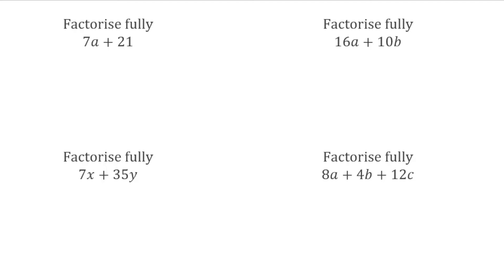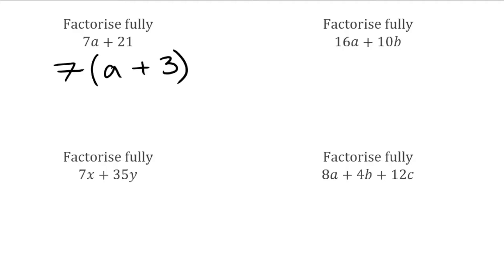For this first one, we have 7a plus 21. Looking at the numbers first, I've got 7 and 21 — the highest common factor of those is 7, so I'd put that on the outside. I don't have a common letter term; I have an a on the left and nothing on the right. Opening the bracket: to get 7a we'd do 7 multiplied by a, then add, and we need 21, which is 7 multiplied by 3. So fully factorised: 7(a + 3).